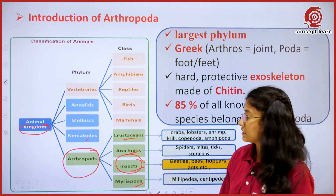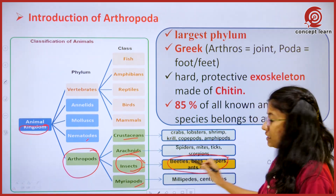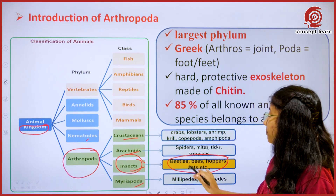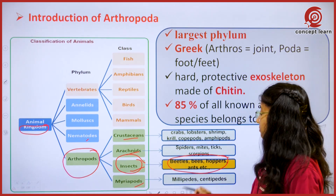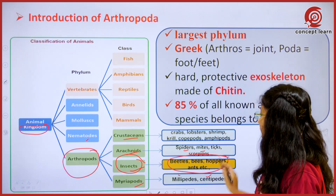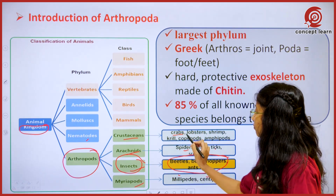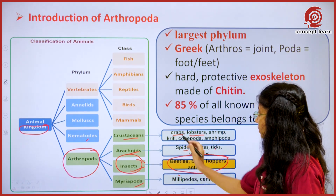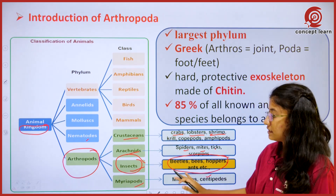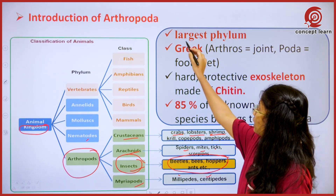There are several insects like beetles, bees, hoppers, and ants. Along with these insects we can see several terrestrial organisms like millipedes, centipedes, spiders, mites, and ticks. Apart from these, there are also a few aquatic organisms like crabs, lobsters, and shrimps. All these classes together come under the phylum Arthropoda.